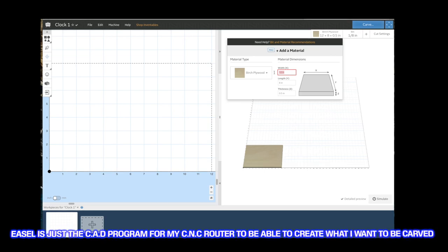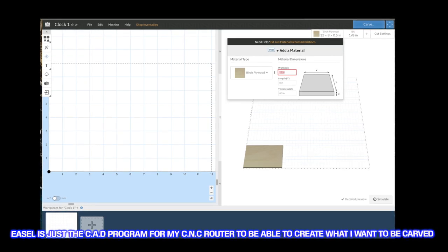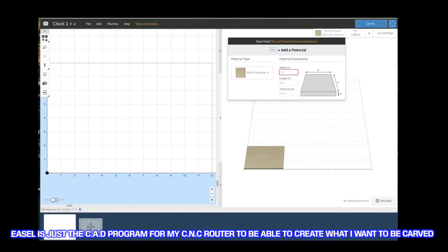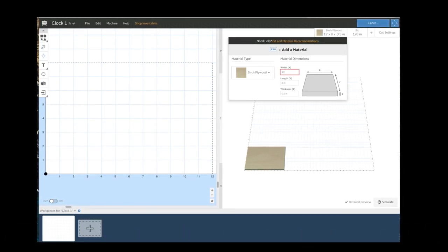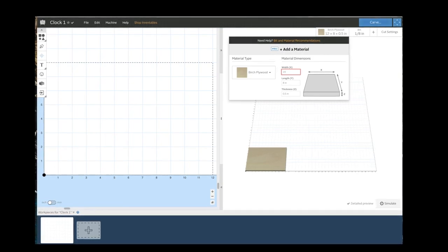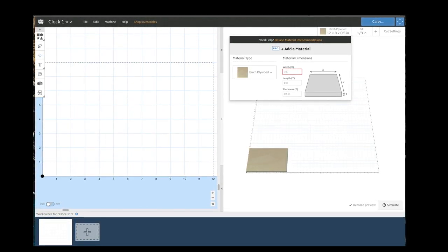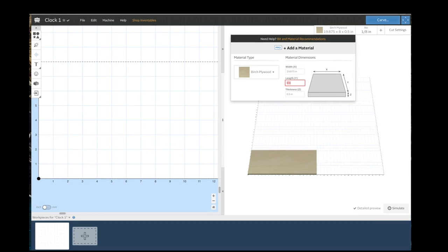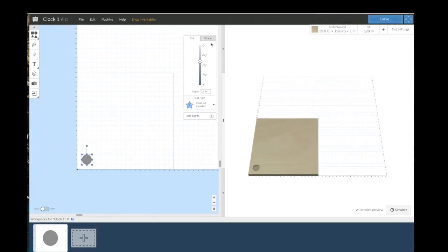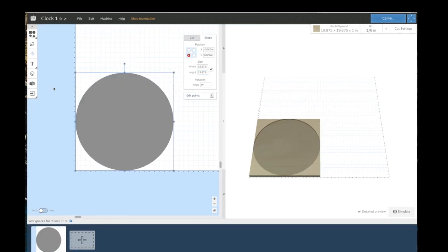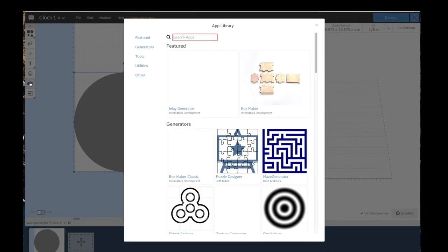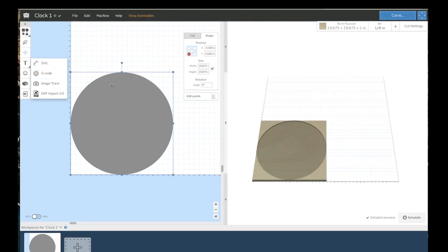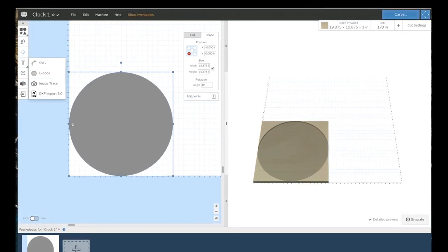Okay, so now I'm in Easel and I'm going to go ahead and put up the dimensions for the clock. It will basically be just the template for the Roman numerals that I'm going to have my CNC carved. So my clock is 19 and 7 eighths, so I'm just going to do the material dimensions the same. Okay, now I'm just going to go ahead and import a template or a Roman numeral clock template. And all I'm going to be doing is just the 12, the 3, the 6, and the 9.